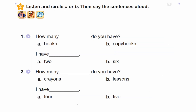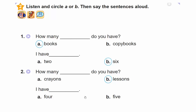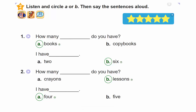2. Listen and circle A or B. Then say the sentences aloud. 1. How many books do you have? I have 6. 2. How many lessons do you have? I have 4. Excellent!